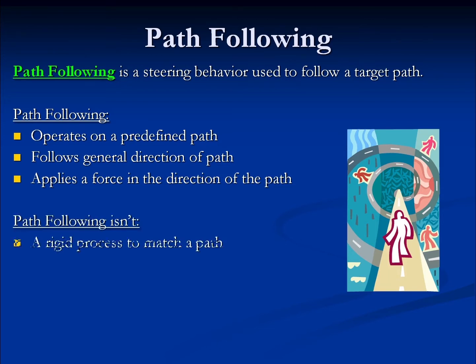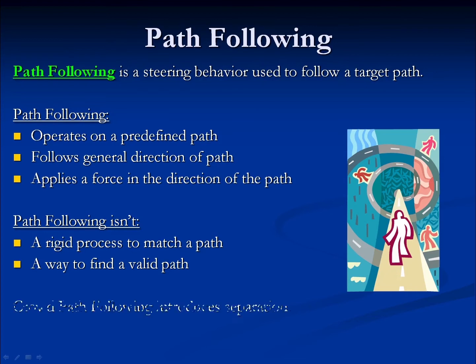What path following is not is a rigid process to match a path, because it's always going to wander — that is what makes the behavior more lifelike. Nor is it a way to find a valid path; you must have already planned out a path in order to use this behavior. Crowd path following is a variant of path following that adds another behavior, known as separation, in order to try and prevent agent collisions.